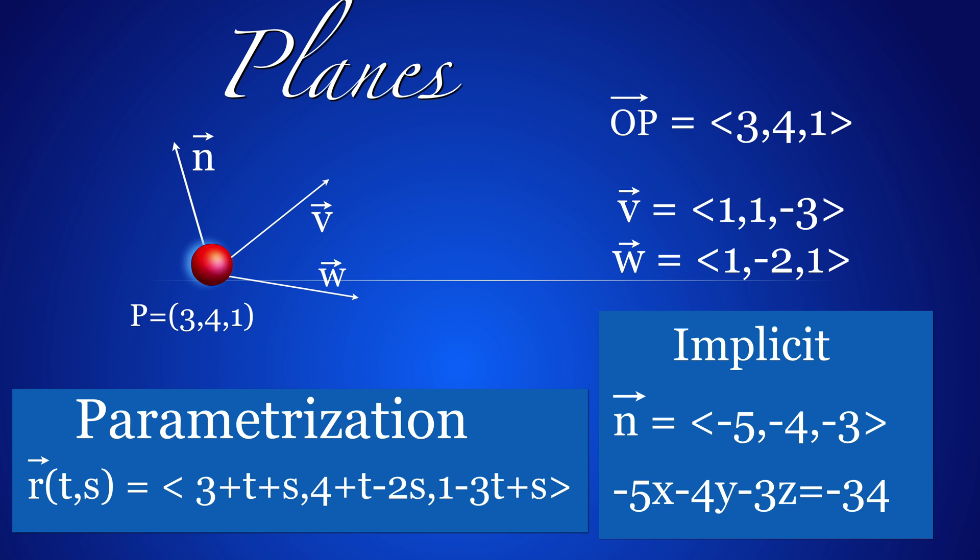Planes are either given as a parameterization using two parameters, here called S and T, or by an implicit equation of the form Ax plus By plus Cz is equal to D.